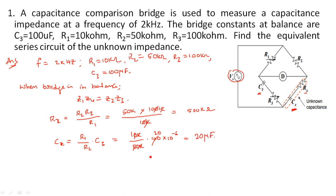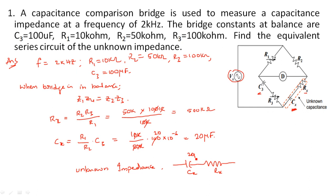The unknown impedance consists of a capacitance in series with a resistance. Looking at the circuit diagram, Rx and Cx are both in series — so the unknown impedance Z is 20 μF in series with 500 kΩ.